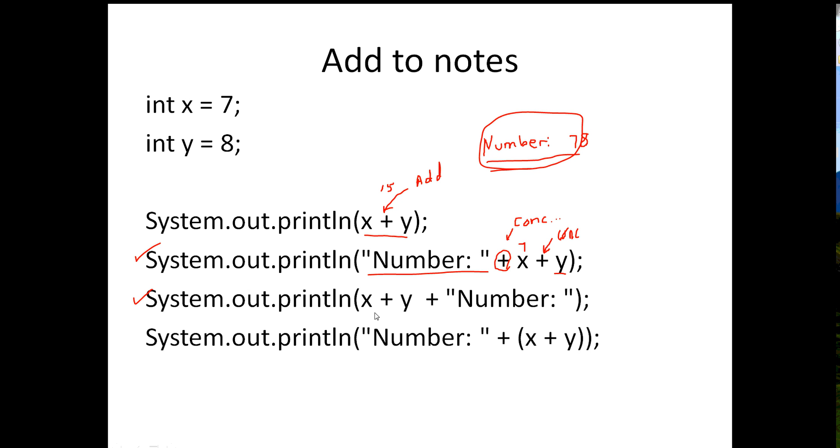The next one down does this: it sees a number 7, it sees the number 8. The plus sign goes, okay, I can add these two numbers together. That makes sense. So this is really 15. And then we have a plus sign. We're trying to add 15 to a string, which you can't do. So we don't add it to a string, we concatenate. So it's just going to say 15 number. And then the last one, what happens is because of the parentheses. Once it sets up the parentheses, then the compiler knows, okay, now we have two integers. We're going to add those together. So it's going to say number colon and then 15.